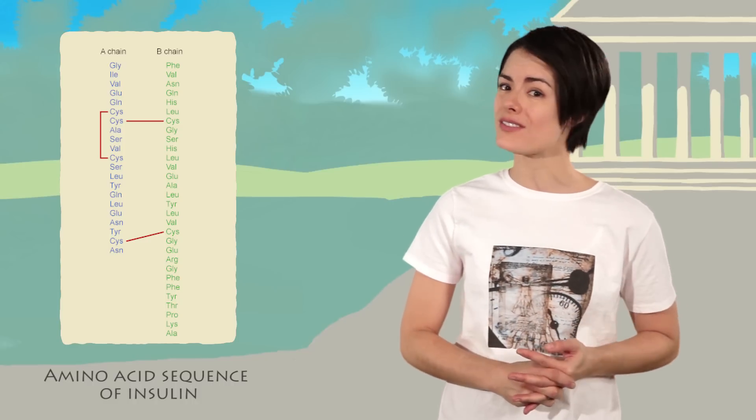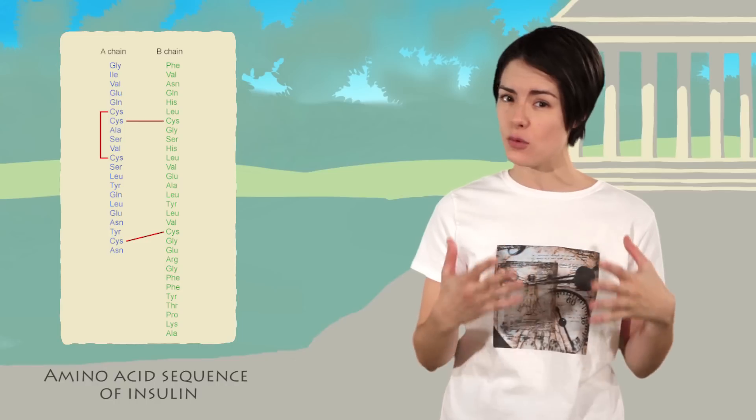Before Sanger's work, it was not clear that proteins had a defined sequence. His groundbreaking discovery was recognized by the Nobel Committee in 1958.